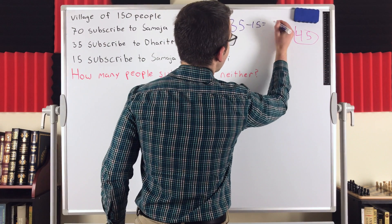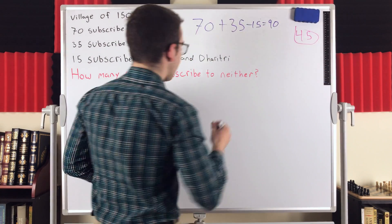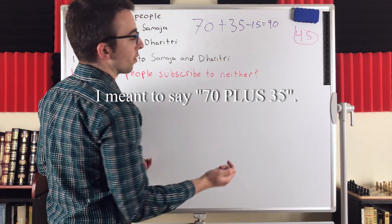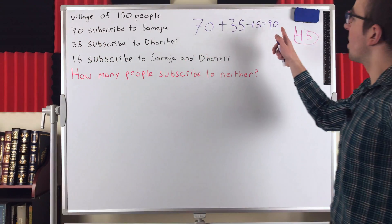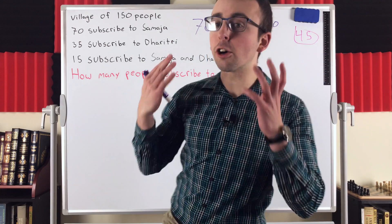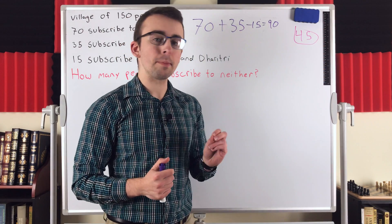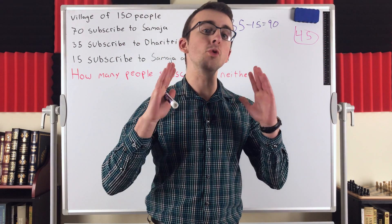So we just want to subtract that 15 out of the count. And then what will that be? That's going to be 90. 70 plus 35 is 105, minus 15 is 90.